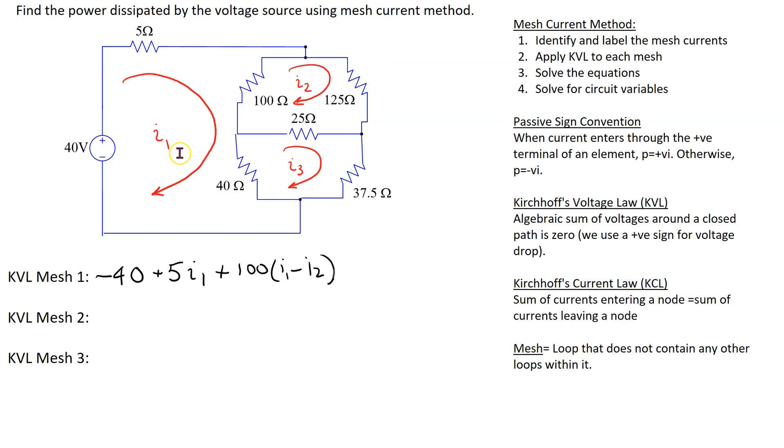And last we have the 40 ohm resistor with which again two mesh currents flow, and we give precedence to the direction of the mesh current for which we are writing KVL. So this means this is 40 times I1 minus I3 equals zero.